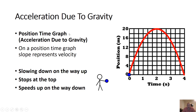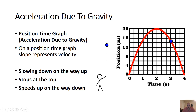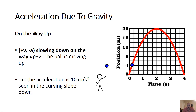Here's a position-time graph of a ball being thrown up. You can see what's actually happening: it's going up, slowing down on the way up, and coming back down. Its fastest motion is at the bottom and its slowest motion is at the top — minimum velocity there. So it's slowing down on the way up and speeding up on the way down.